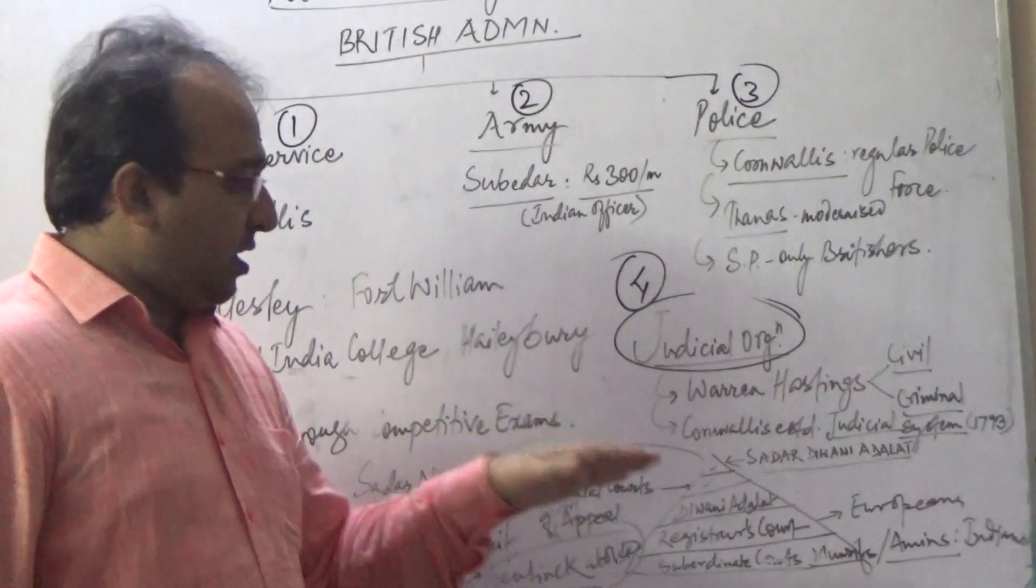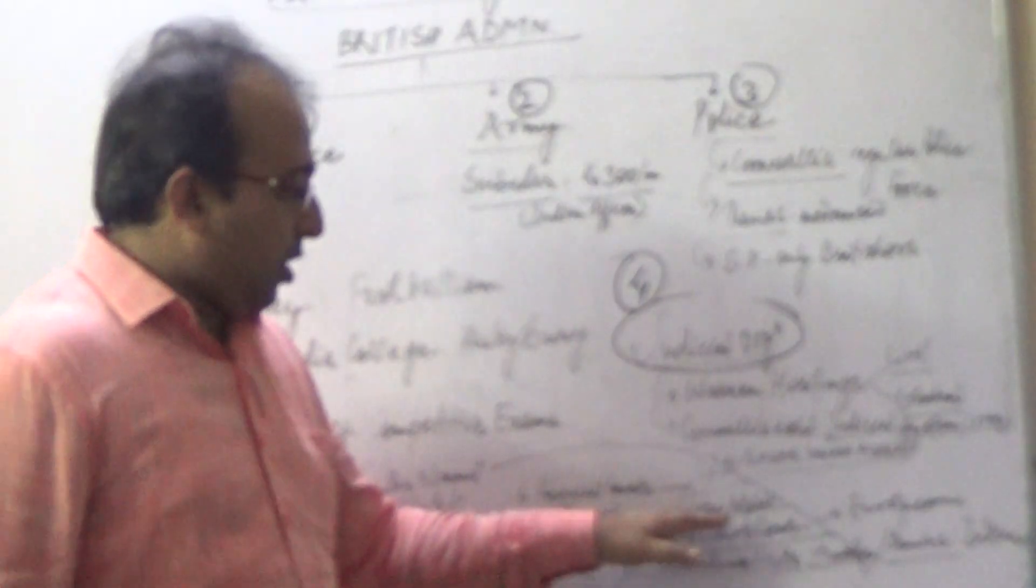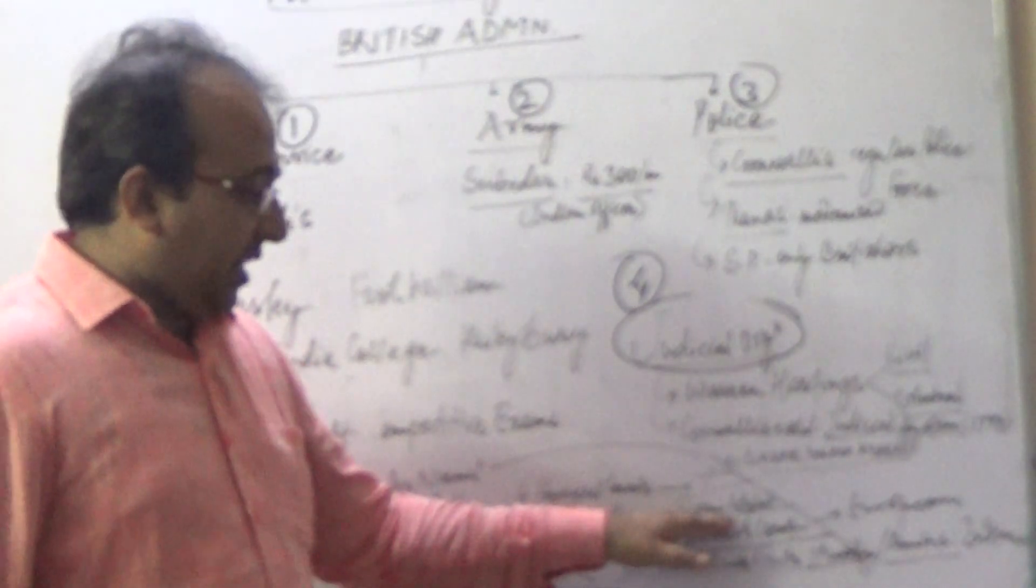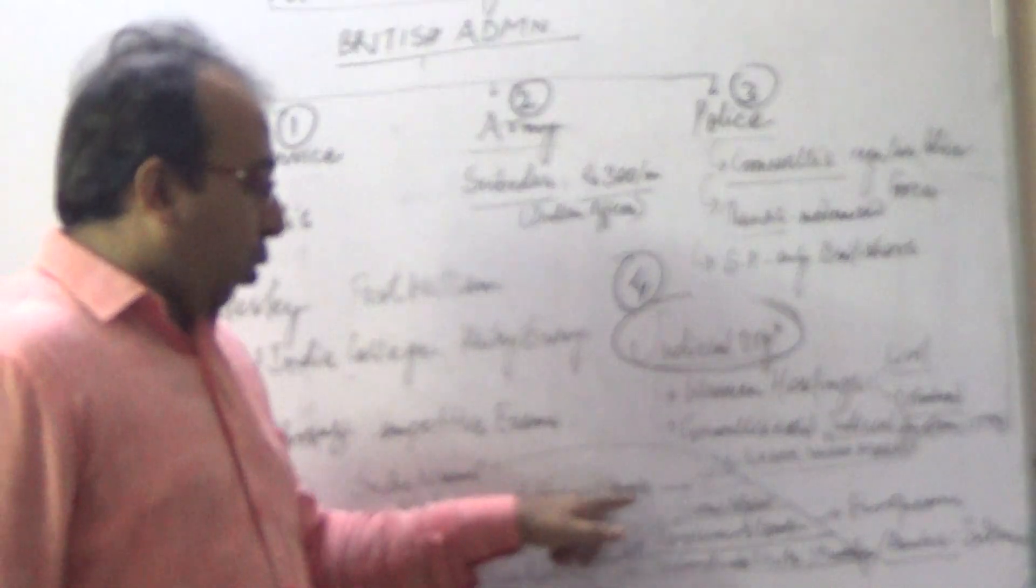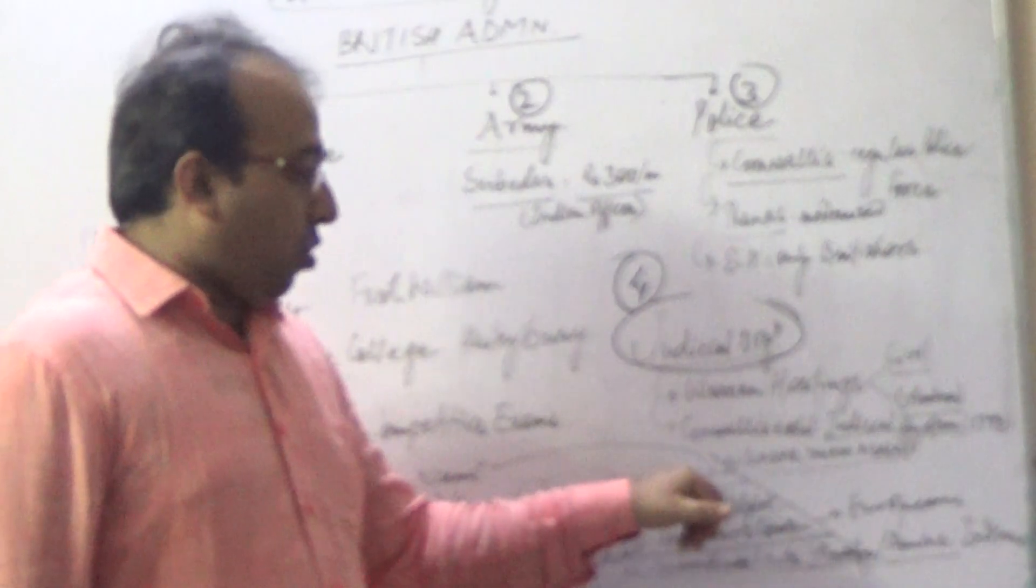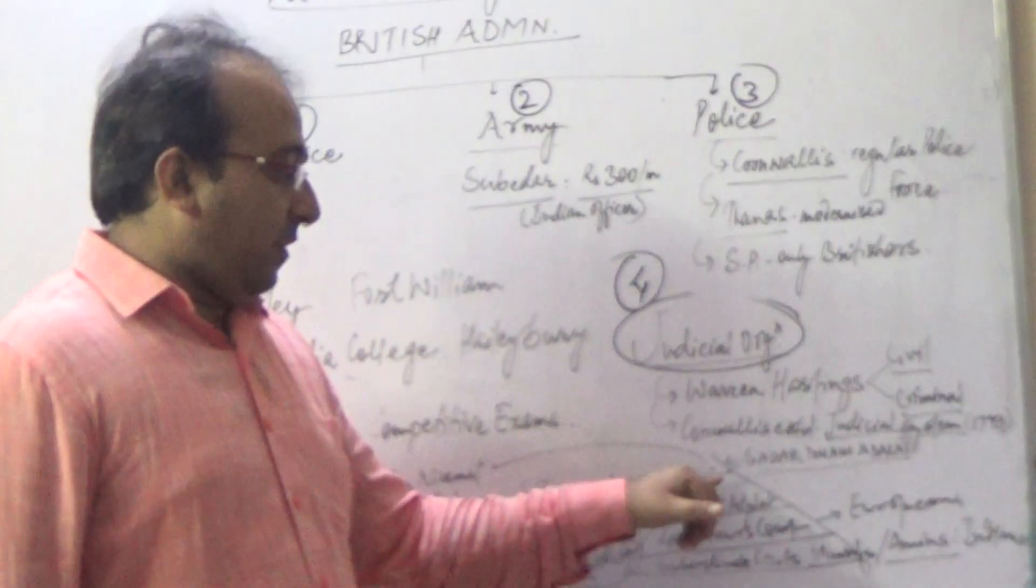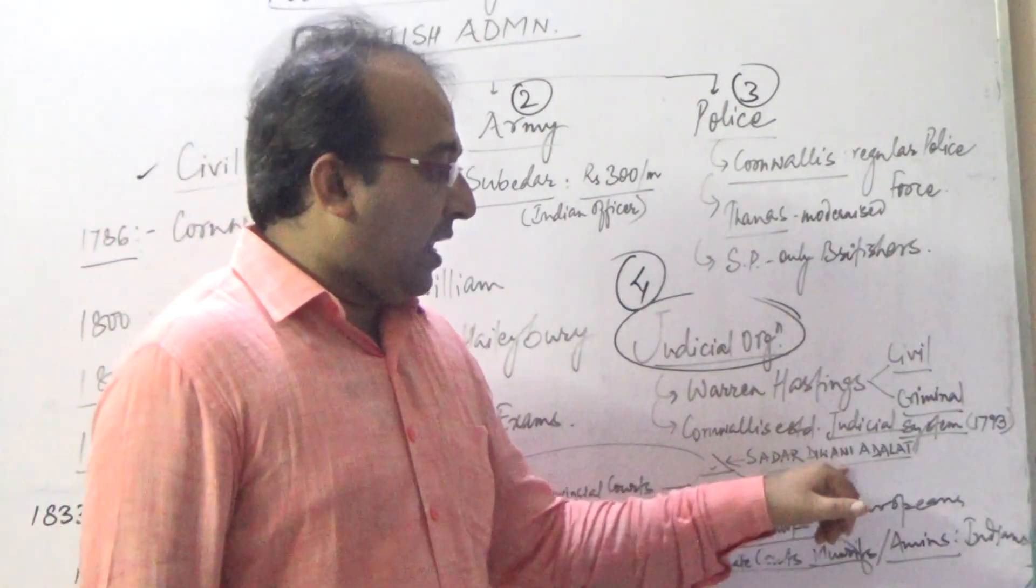The judicial dispensing system or justice system had one Divani Adalat. Then we were having a fourth structure, that was the provincial courts of civil appeal. Provincial courts of civil appeal was also established at the fourth level.